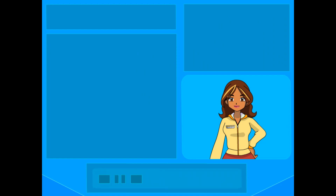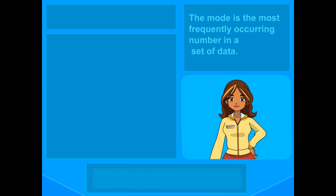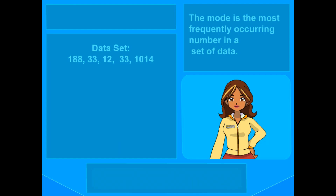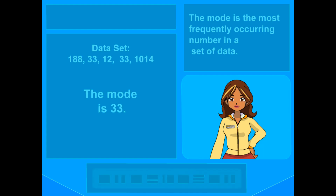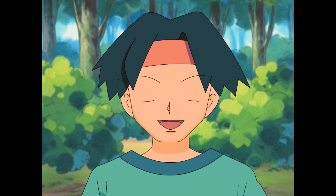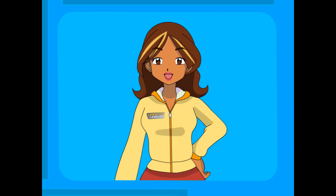On to mode. The mode is the most frequently occurring number in a set of data — in other words, the number that appears most often. Our data set is 188, 33, 12, 33, 1,014. The only number in this set that appears more than once is 33, so 33 must be the mode. You might want to find out the mode because the mean can be a lot higher or lower than the number that appears most often. There are a lot of ways to look at the same information — each gives a different view on the numbers.